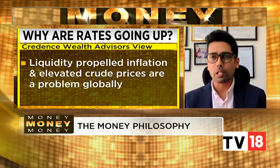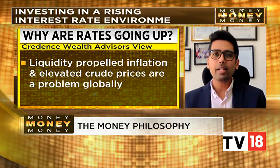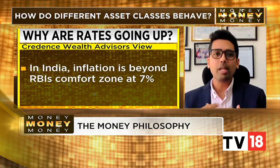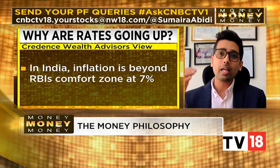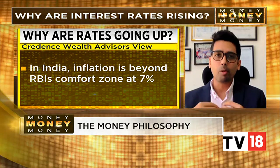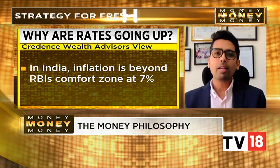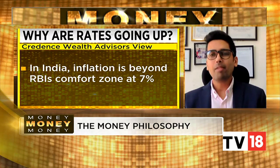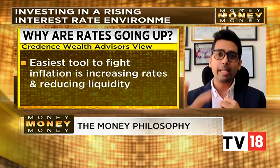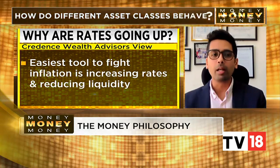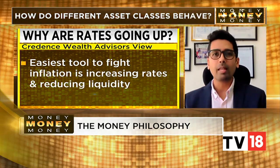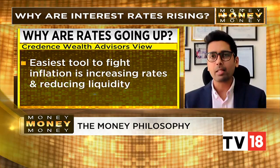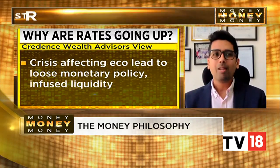What I mean by loose monetary policy: the typical steps taken when a crisis hits include reducing interest rates and infusing a lot of liquidity into the system. In the Indian context, repo and reverse repo rates are reduced. Liquidity is infused by reducing CRR or SLR ratios, or through open market operations where the RBI buys bonds from the market, giving more liquidity to banks. Globally, we call this quantitative easing.